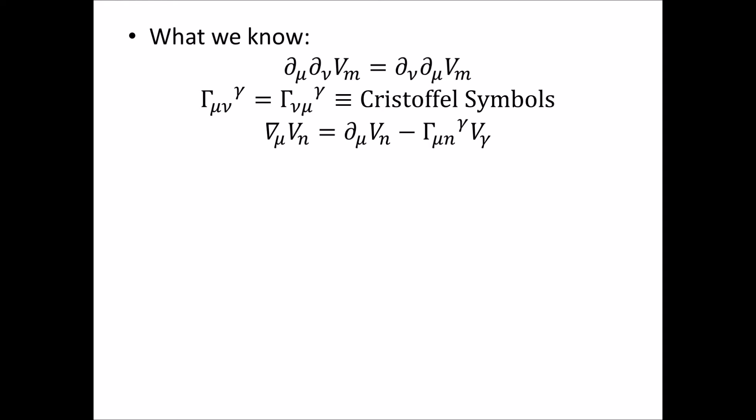The covariant derivative acting on a tensor, or in this case, just a vector with a single covariant index, is equal to the normal derivative acting on that vector in the locally flat area, and we subtract off this term, which is the Christoffel symbol multiplied by the vector. And we are contracting over gamma here, so as to maintain the integrity of the tensor equation, but this is the covariant derivative of a single covariant indexed vector.